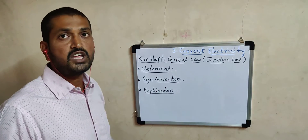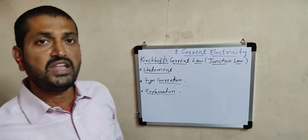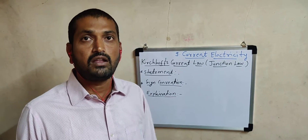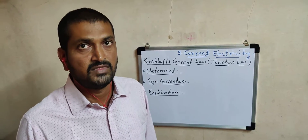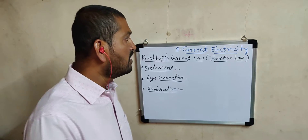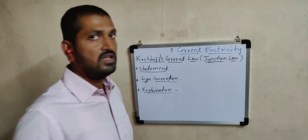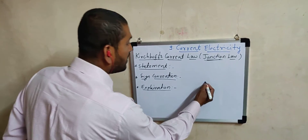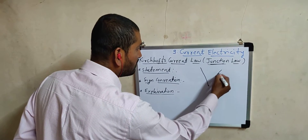Why is it called the junction law? The reason is that it is applicable to any one junction in an electrical or electronic circuit. A junction always stands for a point of meeting — that is, a point where a number of wires are connected together.